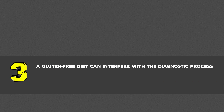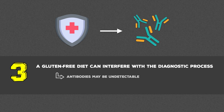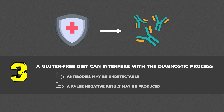Finally, a gluten-free diet can interfere with the diagnostic process. A hallmark feature of the immune response to gluten is the production of specific antibodies in the bloodstream. But if a person with celiac disease is tested for those antibodies when they've been following a gluten-free diet, the antibodies may be undetectable. Thus, a false negative result may be produced, leaving the patient without a clear diagnosis and a future of unexplained symptoms should gluten ever find its way back into their diet.